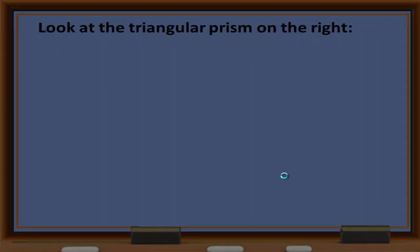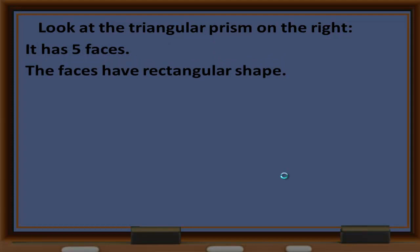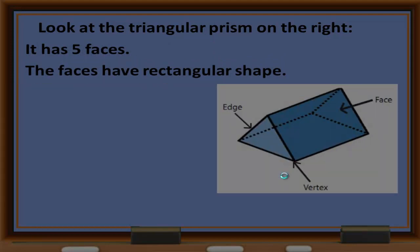Look at the triangular prism on the right. It has five faces. The faces have a rectangular shape. If we count: one, two, three, four, five — it has five faces.